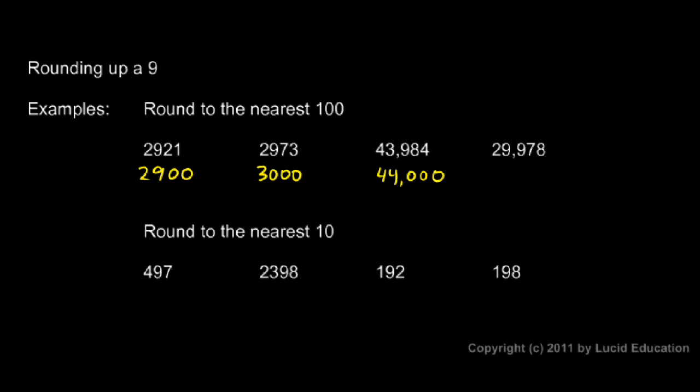So we look at the next place, which is a 7. That's higher than 5, so we round up. So instead of 29,978, we end up rounding this to 30,000.